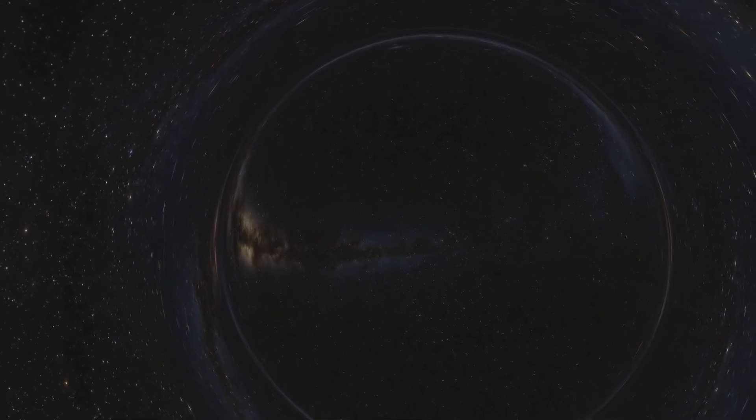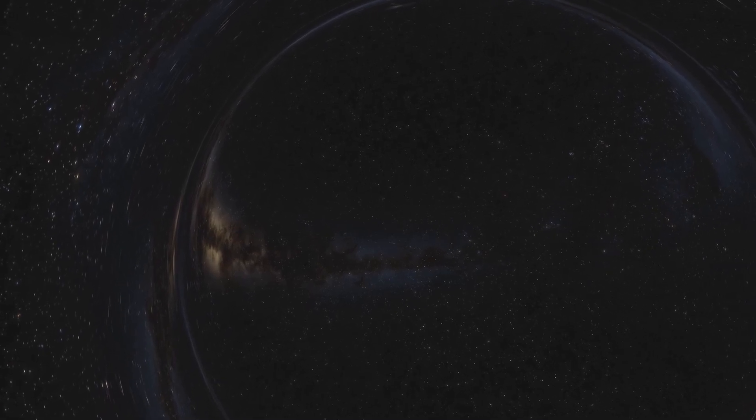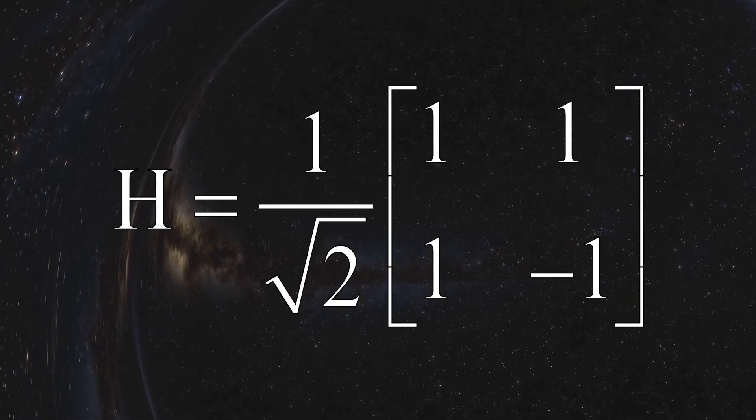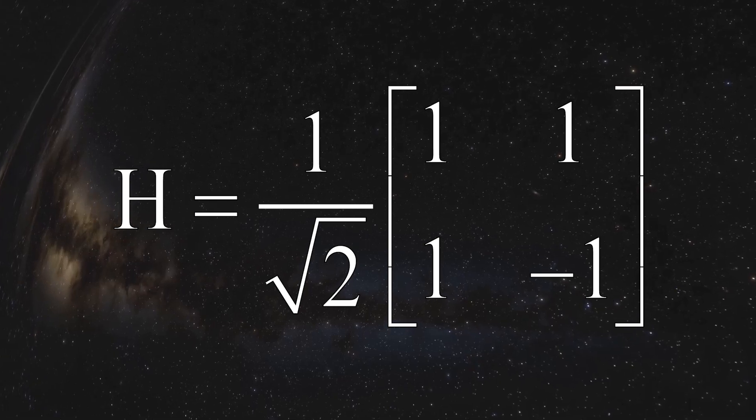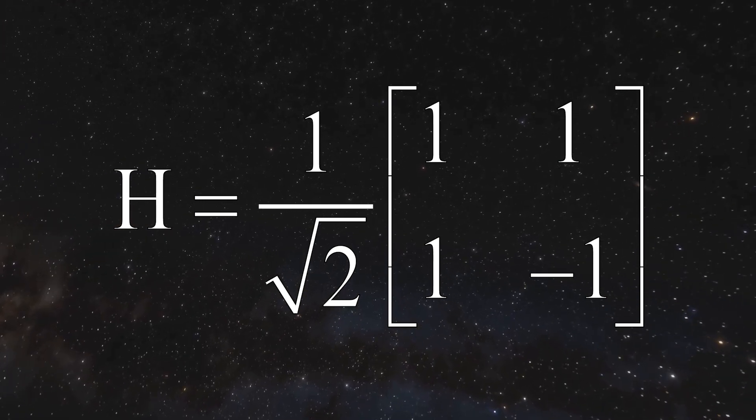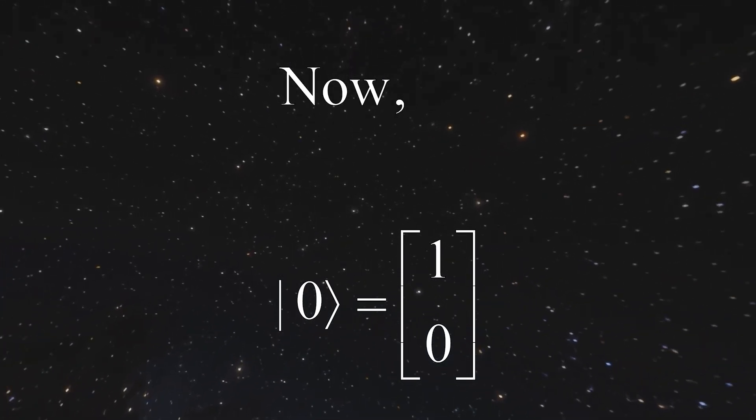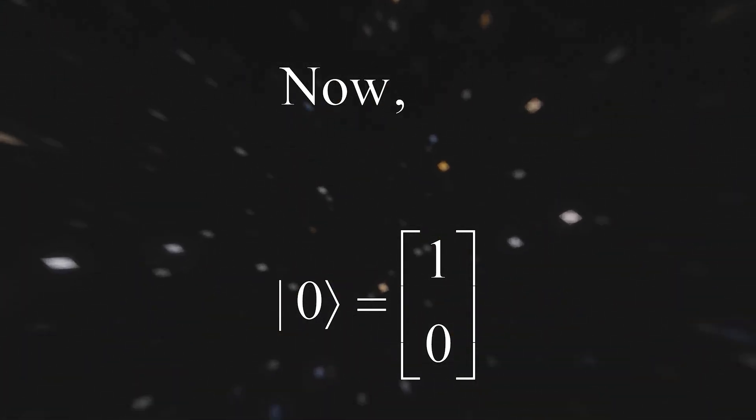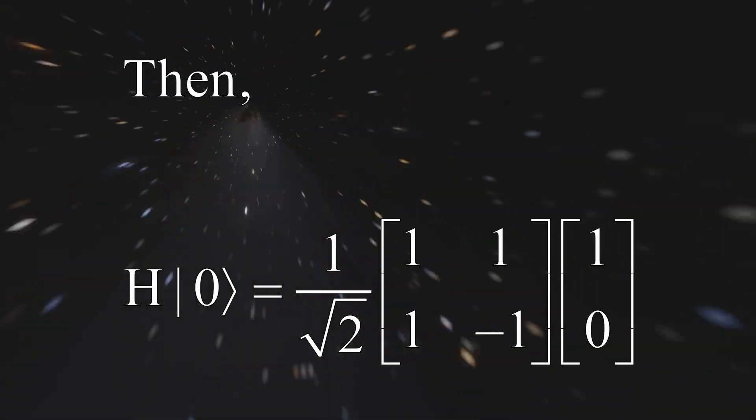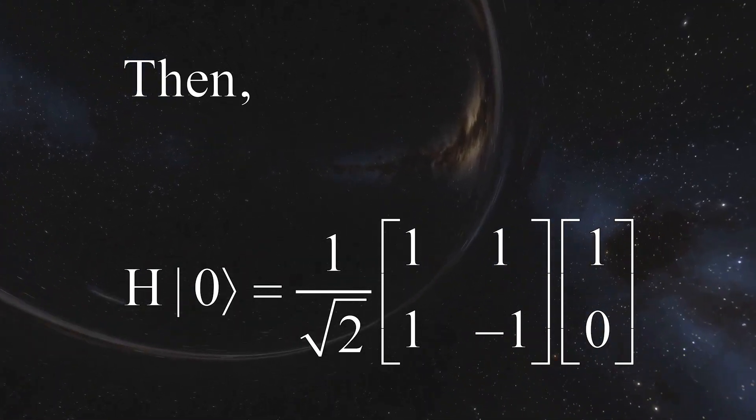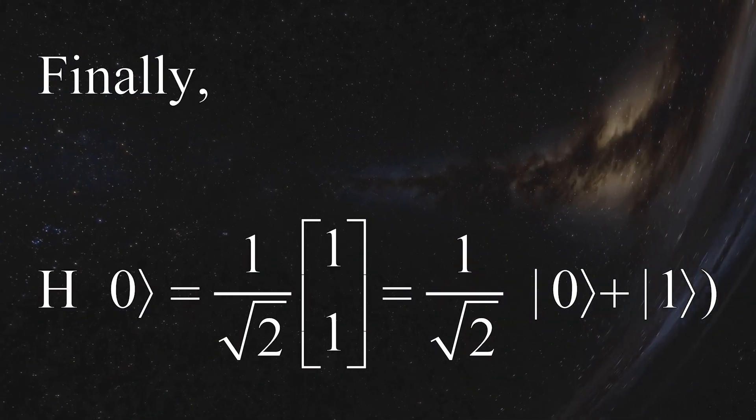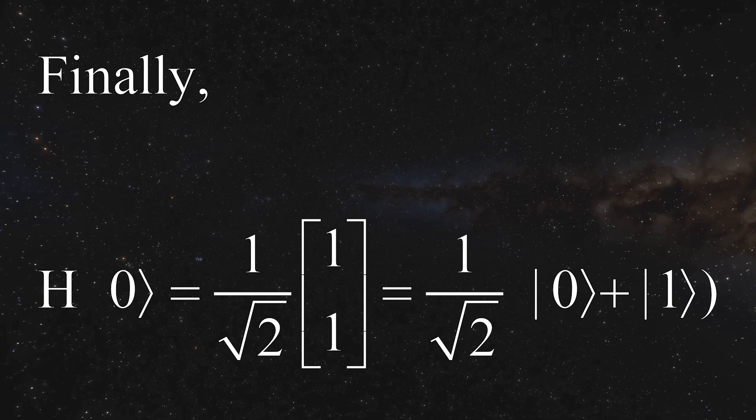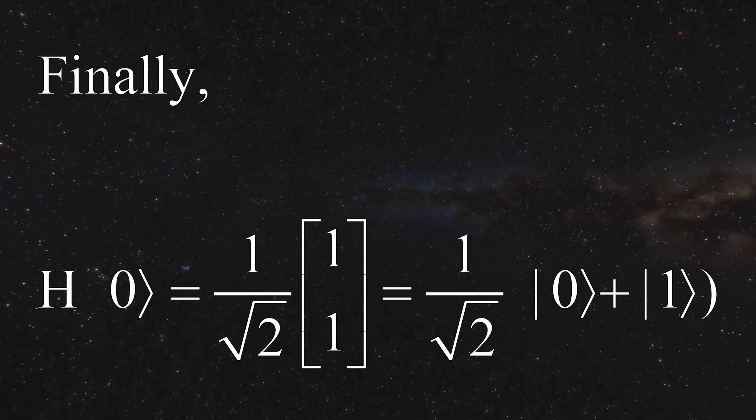The Hadamard gate can be represented by a matrix. We say H = 1/√2 times the matrix with rows [1, 1] and [1, -1]. When we multiply this matrix by our qubit, which starts as |0⟩ represented by the column vector [1, 0], the result is 1/√2 times the vector [1, 1], which is the same as 1/√2 times the sum of |0⟩ + |1⟩, meaning the qubit is now in an equal mix of both states. This is the basic idea of creating superposition with the Hadamard gate.